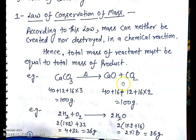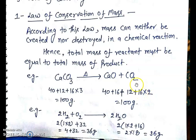And on the product side, the total mass of the product is equal to: 40 (atomic mass of calcium) plus 16 (atomic mass of oxygen) plus 12 (atomic mass of carbon) plus 16 × 2 — because there are two oxygen atoms in carbon dioxide — which also equals 100 grams. This reaction follows the law of conservation of mass, because the total mass of the reactants equals the total mass of the products.